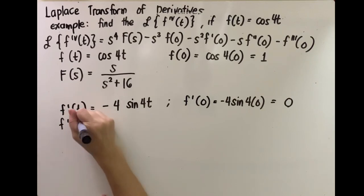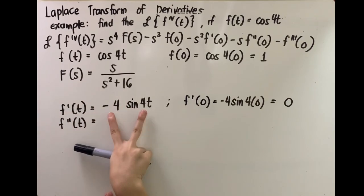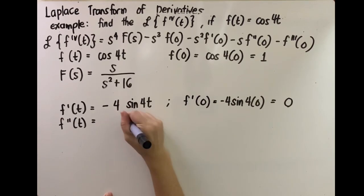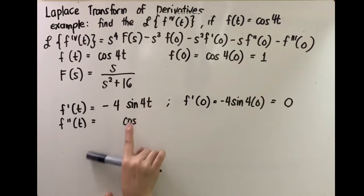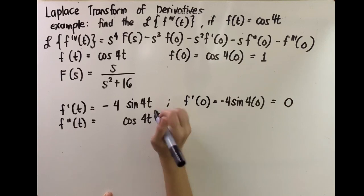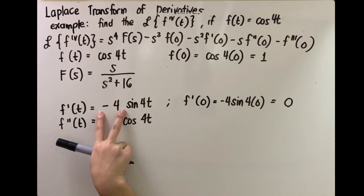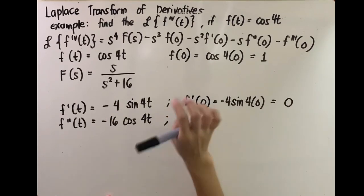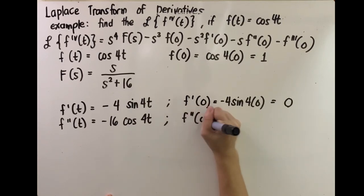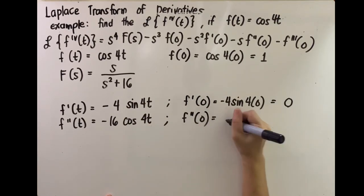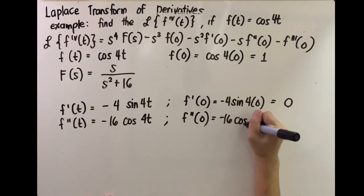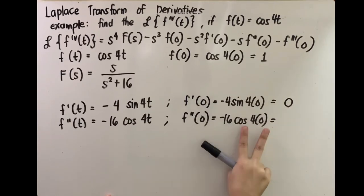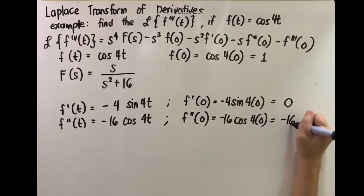Next, f double prime of t: take the derivative of negative 4 sine 4t. The derivative of sine is cosine, and the derivative of the angle 4t gives another factor of 4, multiplied by the previous coefficient negative 4, giving negative 16. So f double prime of t equals negative 16 cosine 4t. Then f double prime of 0: substitute t with 0, giving negative 16 times cosine 0, which is 1. So f double prime of 0 equals negative 16.